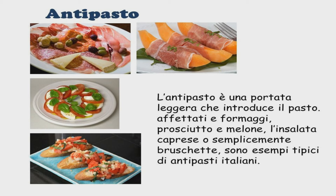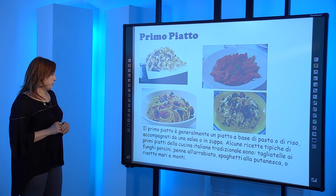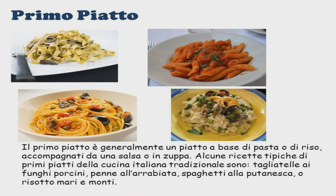Affettate formaggi, come nella prima foto, prosciutto e melone come nella seconda foto, l'insalata caprese o semplicemente bruschette come nell'ultima foto, sono esempi tipici di antipasti italiani. Il primo piatto viene servito dopo l'antipasto ed è generalmente un piatto a base di pasta oppure a base di riso, accompagnati da una salsa o in zuppa. Alcune ricette tipiche sono tagliatelle ai funghi porcini, penne all'arrabbiata, spaghetti alla puttanesca, o risotto mari e monti.